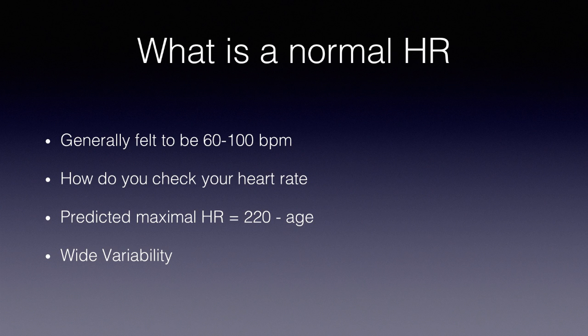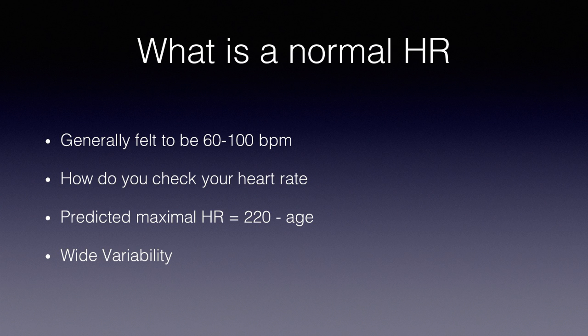Your predicted maximum heart rate is 220 minus your age. If you're 20 years old, your predicted maximum heart rate is 200. The older we get, the lower the maximum heart rate. There's wide variability — your wife's heart rate might be 60 and yours 90, and you're both normal. Patients with resting heart rates in the 50s can feel great and have everything fine. The range of 60 to 100, even down into the 50s, is okay.